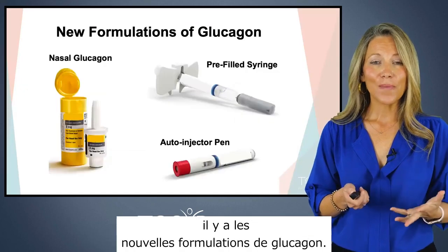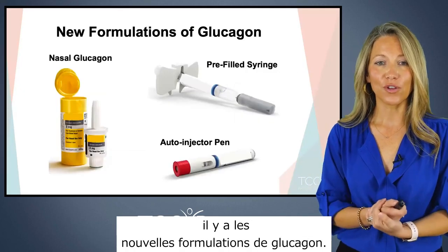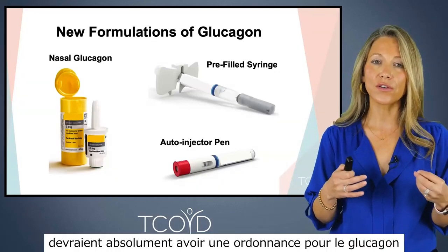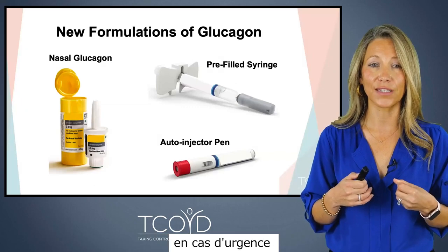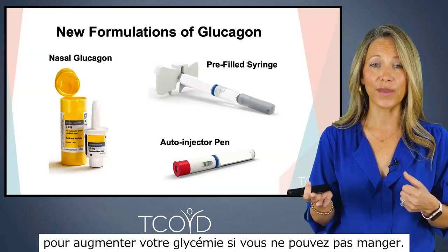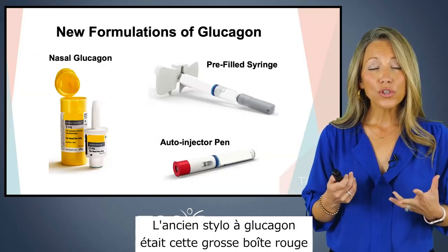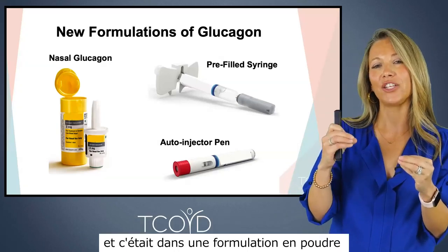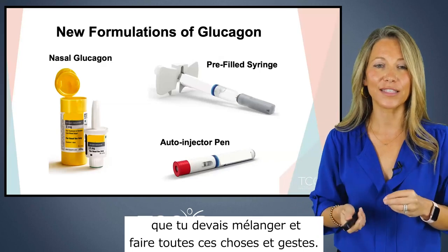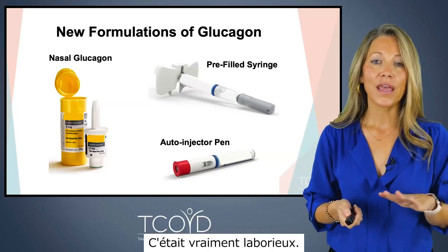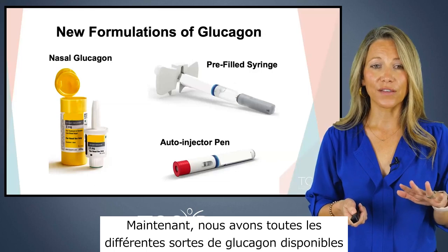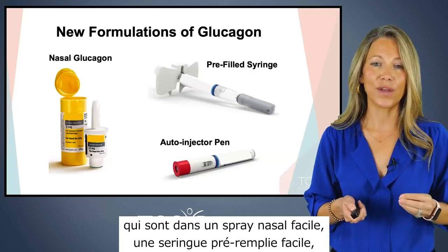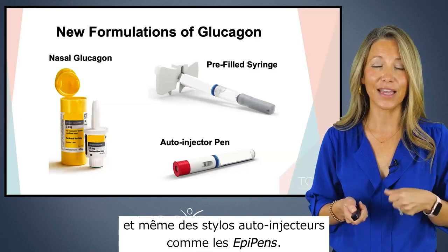Lastly on our new medication list is newer forms of glucagon. Anyone on insulin should have a prescription for glucagon in an emergency to raise blood sugar if you can't eat. The older glucagon kit was a big red box with a powder formulation you'd have to mix — really cumbersome. Now we have glucagon available as an easy nasal spray, an easy pre-filled syringe, and even auto-injector pens like EpiPens.